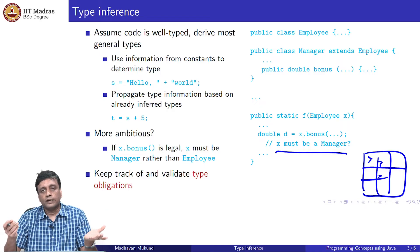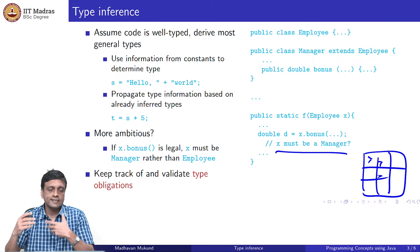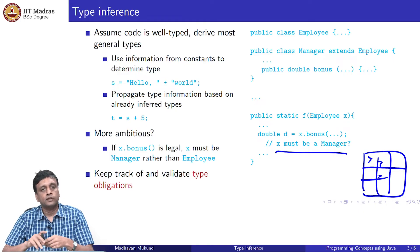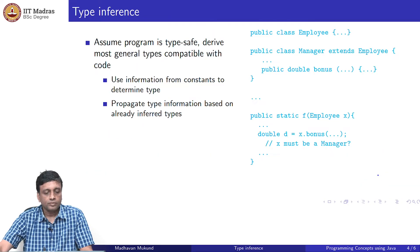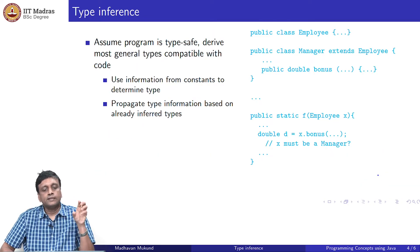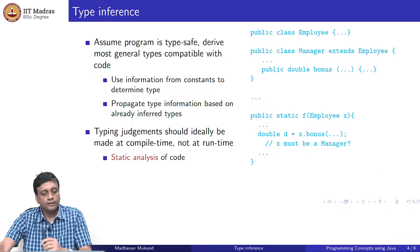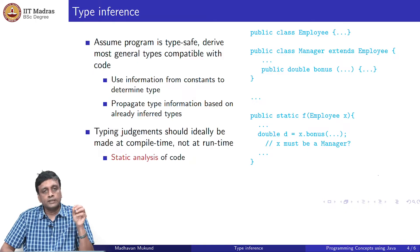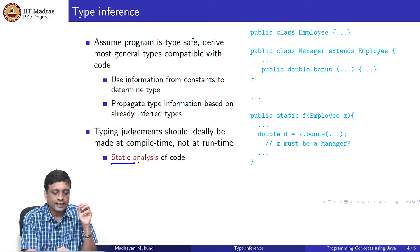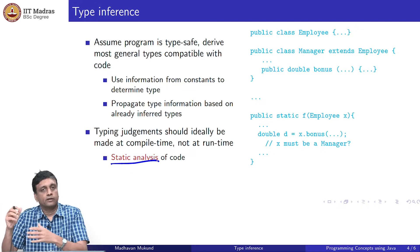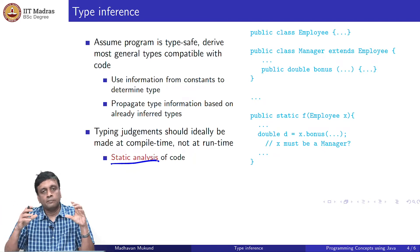Type inference does not imply that the programmer does not annotate — it is only a saving mechanism. If the programmer is allowed to be lazy and not write all the types, can the compiler figure out enough to make sure all types are statically assigned correctly? Assuming the program is type safe, you want to derive the most general types, using constants and inferred types to propagate. The crucial thing is that this must all be done statically — this is called static analysis, meaning the compiler reads the code, not the Java runtime.